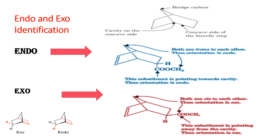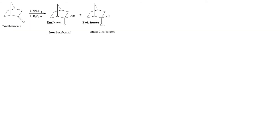We will see more examples for the identification of the endo and exo isomer. Here, the first example — this is an exo isomer. Why is it exo? Because the substituents attached are cis to each other; this OH and this are cis to each other and this is pointing away from the cavity, so this is an exo isomer. And here, this is an endo isomer. Why? Because the substituent is trans to the bridge carbon — this is the bridge carbon atom, this is the substituent, they are trans to each other and this is pointing towards the cavity. So this is an endo isomer.